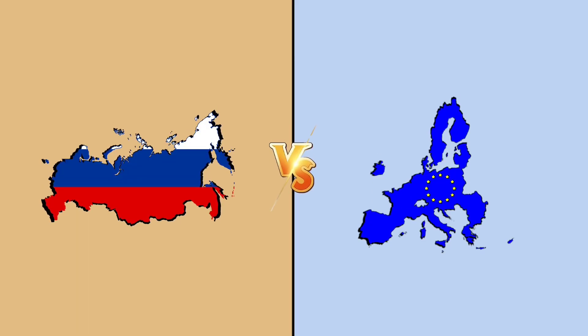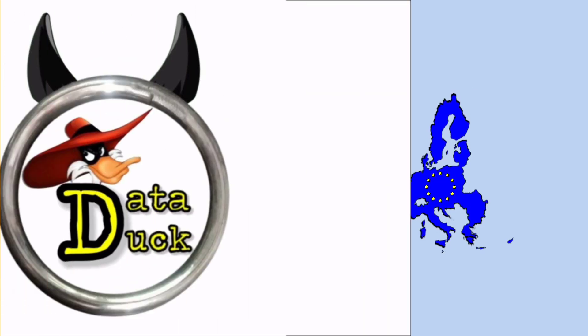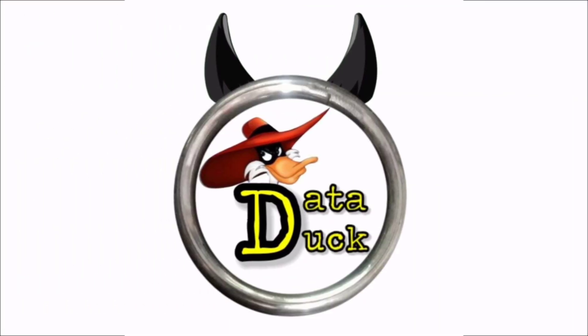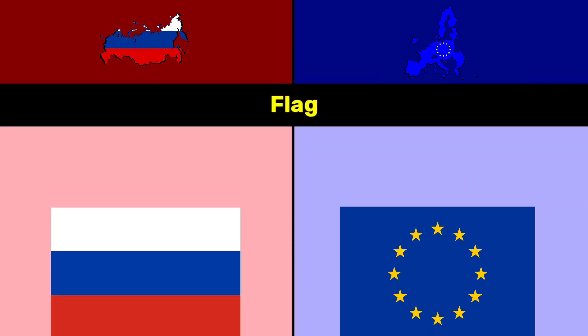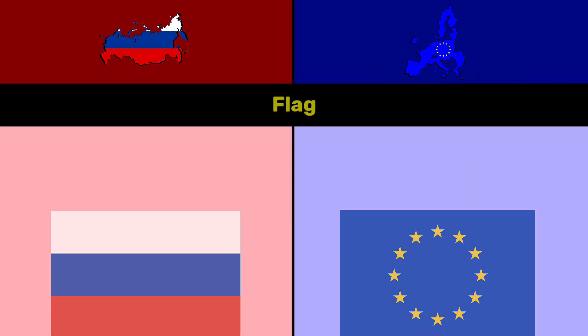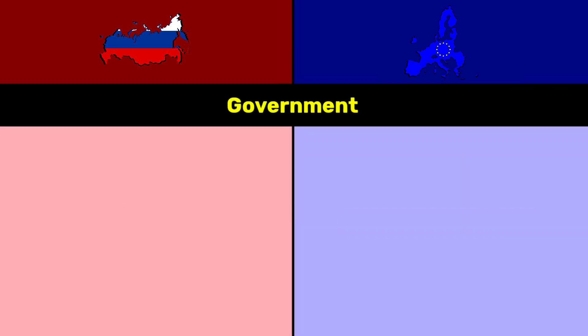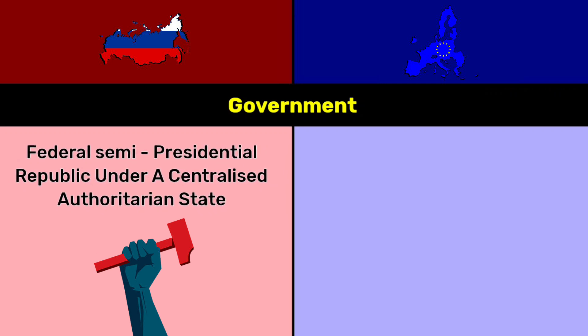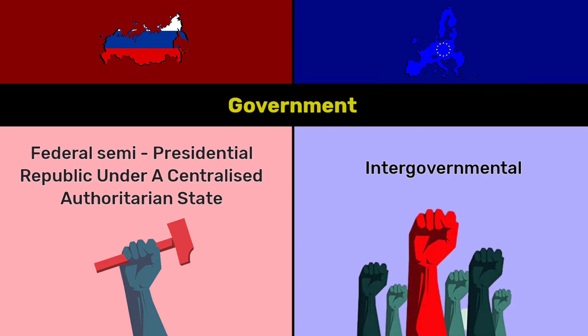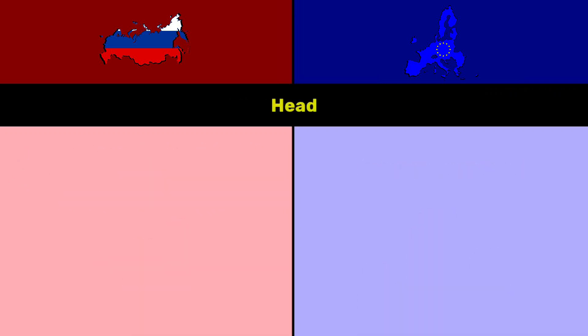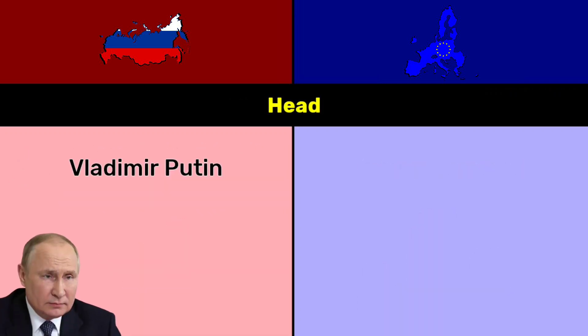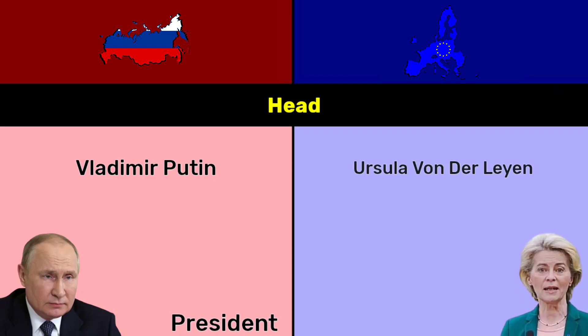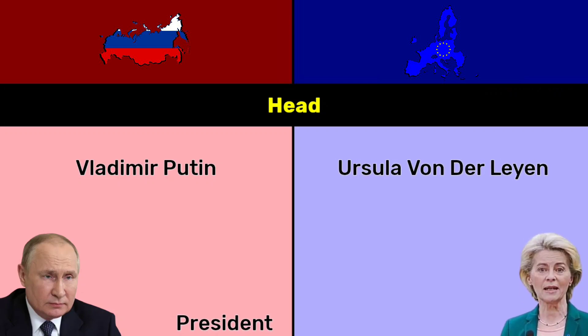Hello guys, today we see Russia versus European Union. Let's welcome our Data Duck YouTube channel. Flag: Russia's government is a federal semi-presidential republic under a centralized authoritarian government. The EU is an intergovernmental organization. Head: Vladimir Putin, role is President. Ursula von der Leyen, role is President of the Commission.